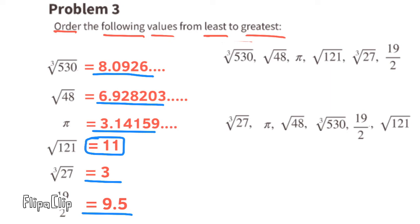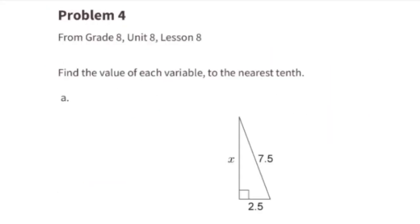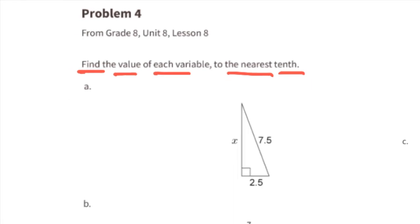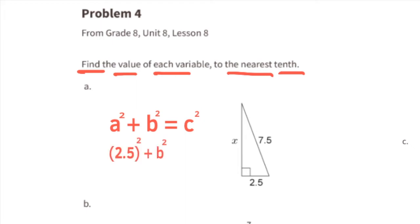Problem number four from eighth grade Unit 8 Lesson 8: find the value of each variable to the nearest tenth. Part a: one of the legs of this right triangle is labeled x. We can use the Pythagorean theorem: a squared plus b squared equals c squared. Substitute a squared with 2.5 squared, b squared is x, and c squared equals 7.5 squared.